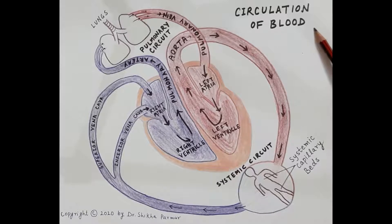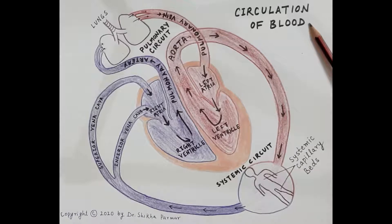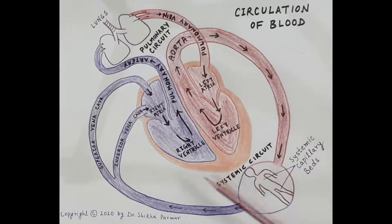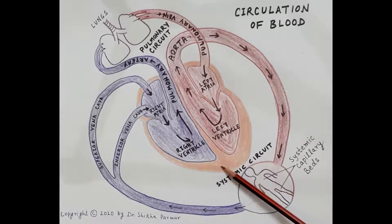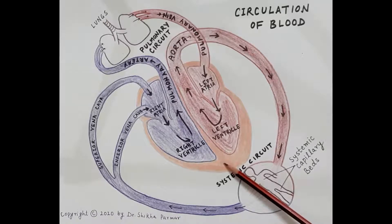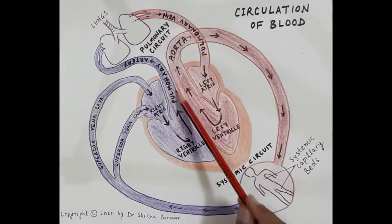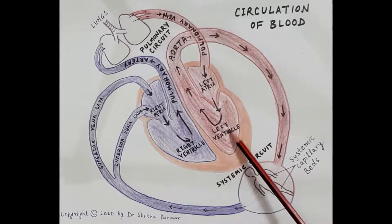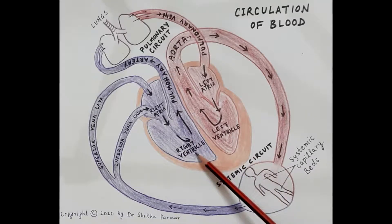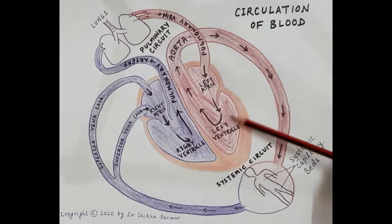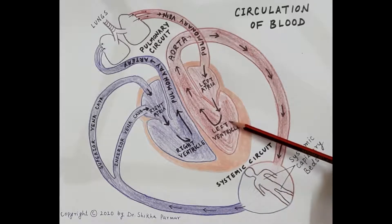Now in the body there are two types of circulation: one is the pulmonary circulation and the other is systemic circulation. This diagram shows the heart. As we all know, the heart is a hollow muscular pump and its function is to supply blood to each and every cell of the body. The heart is divided into two parts by a septum, giving a left part and a right part.